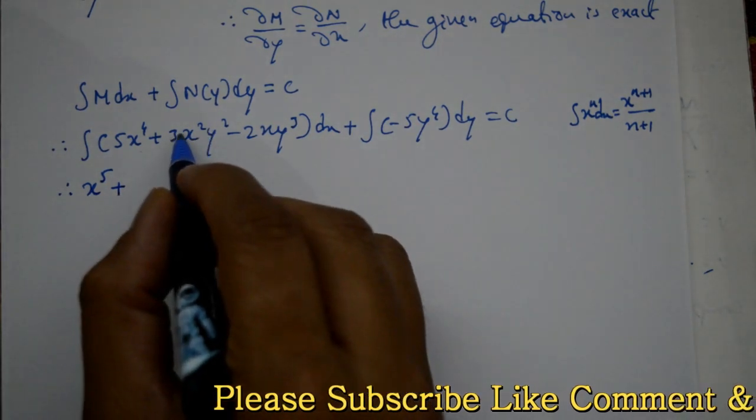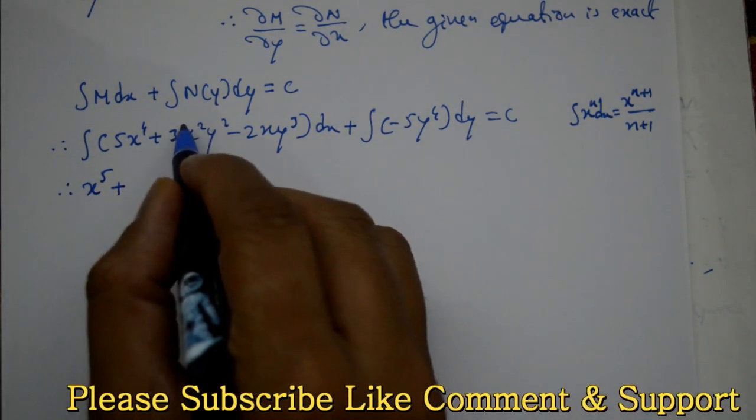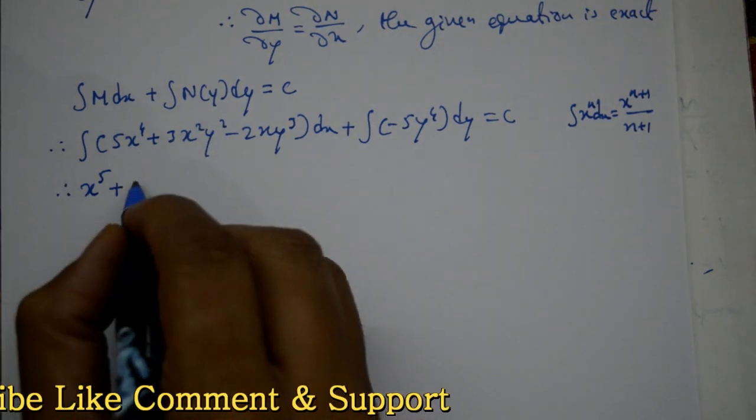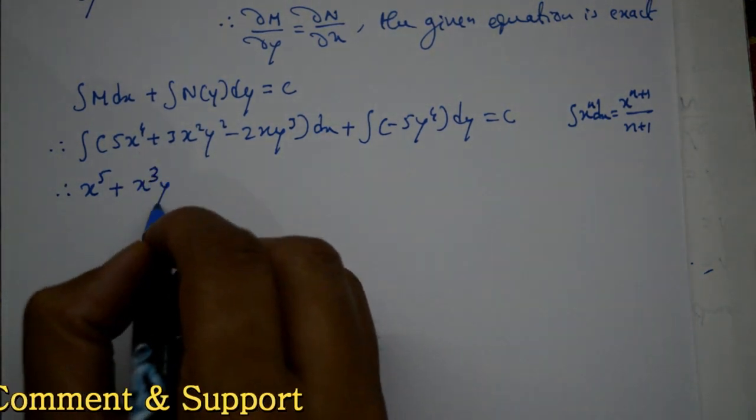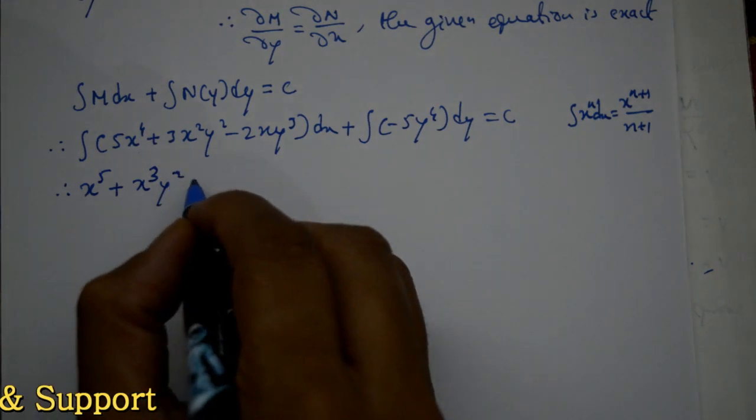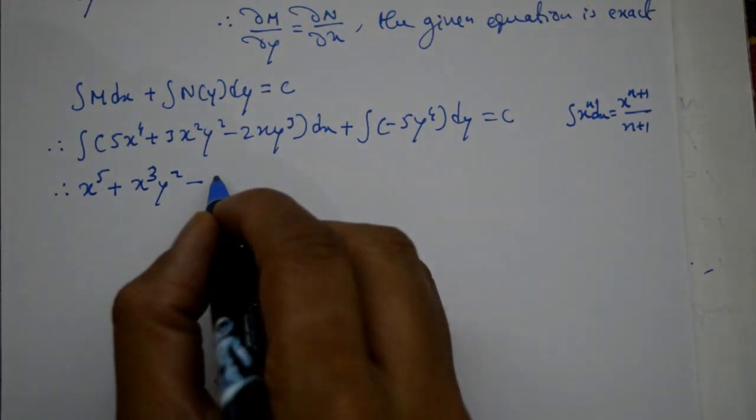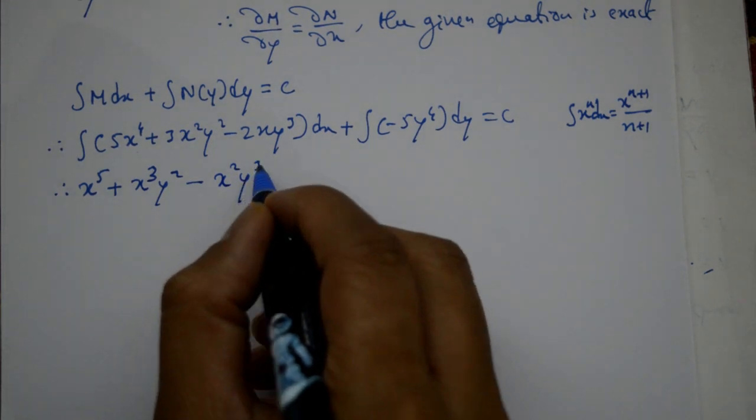Then minus 2y^3, integrate x to get x^2/2, 2 cancel, so x^2y^3.